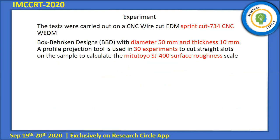The tests were carried out on a CNC Wire-Cut EDM Spark Hub 734. The Box-Behnken Design used a workpiece diameter of 15 mm and thickness of 10 mm. Thirteen experiments were used to cut the samples. Surface roughness was measured using an SG400 surface roughness scale.